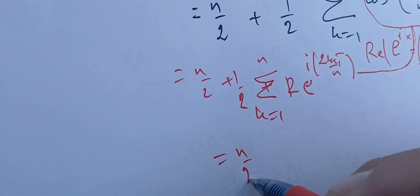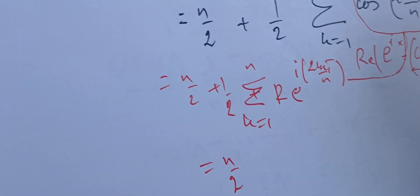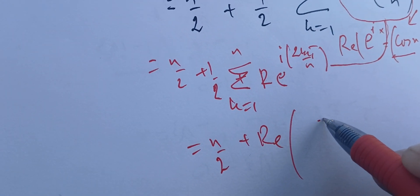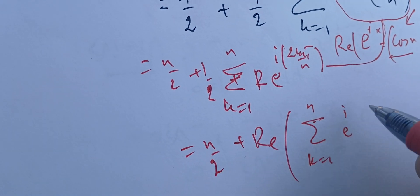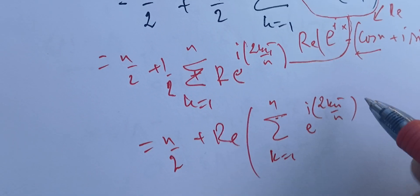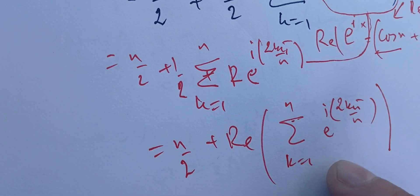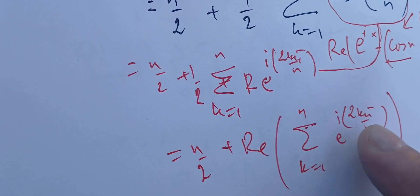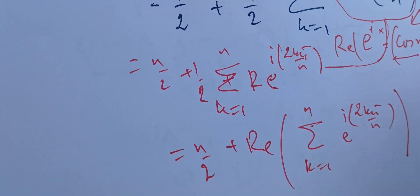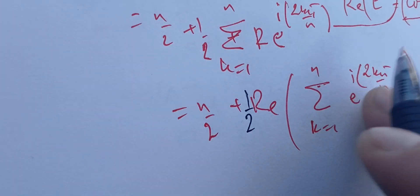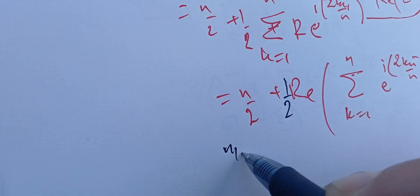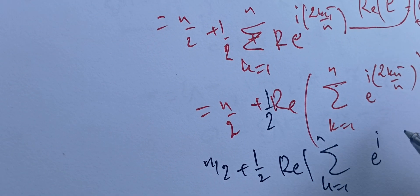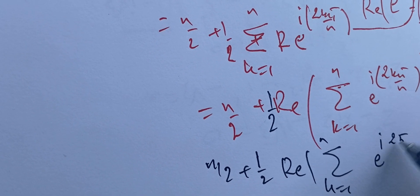I can rewrite the exponential as (e^(i·2π/n))^k, so the sum becomes Σ (e^(i·2π/n))^k from k=1 to n. This is a geometric series. So I have n/2 + (1/2)·Re[Σ_{k=1}^{n} (e^(i·2π/n))^k].